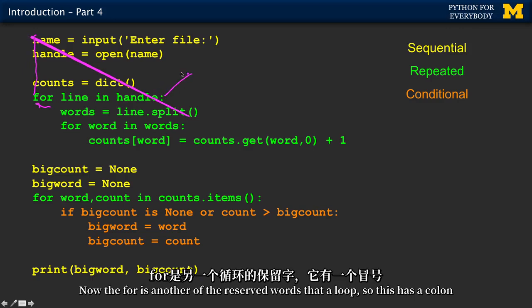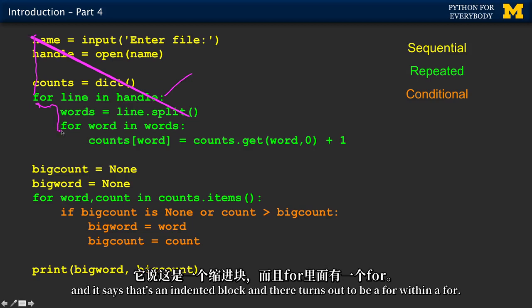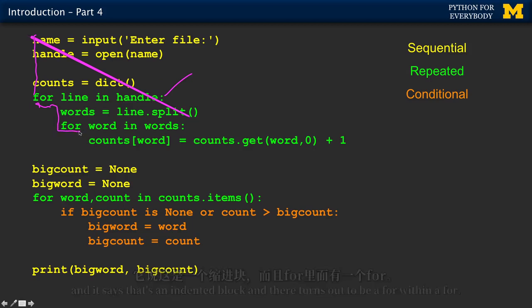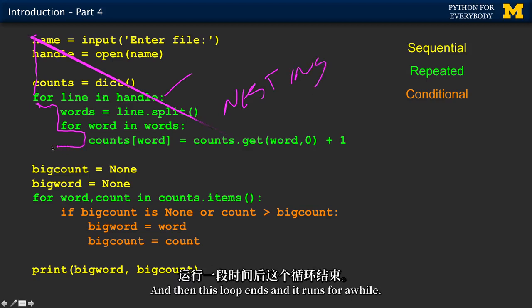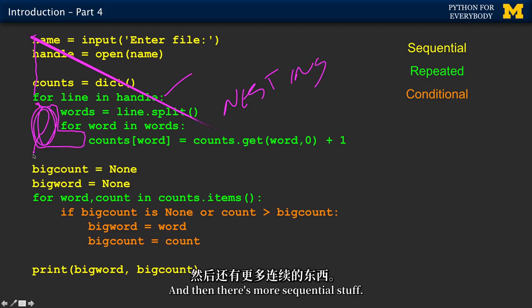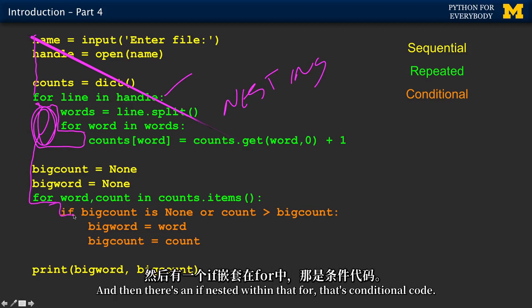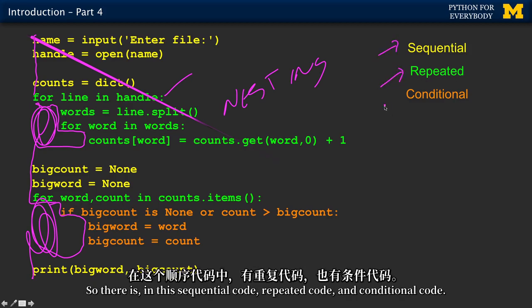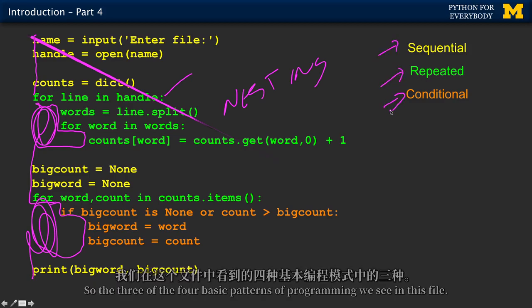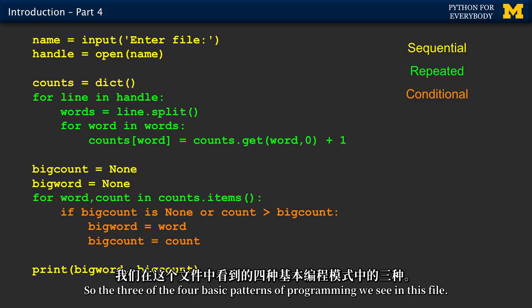This has a colon and it says that's an indented block. There turns out to be a for within a for. This is called nesting. Then this loop ends and it runs for a while, and then there's more sequential stuff. There is a for which is repeated code, and then there's an if nested within that for. That's conditional code. This will run for a while, and then it comes out and does some sequential code. So there is sequential code, repeated code, and conditional code.